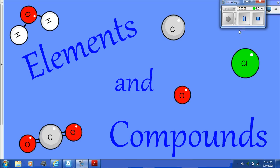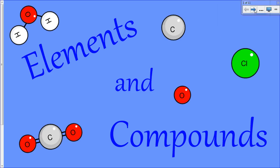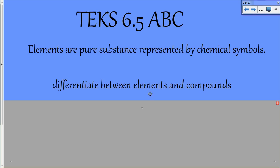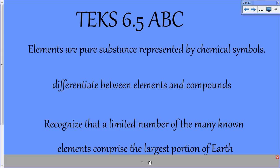This lesson is on elements and compounds. Today we're going to be looking at the TEKS 6.5 A, B, and C. Those include elements or pure substances represented by chemical symbols. We will also differentiate between elements and compounds and recognize that there are different elements that make up our Earth.